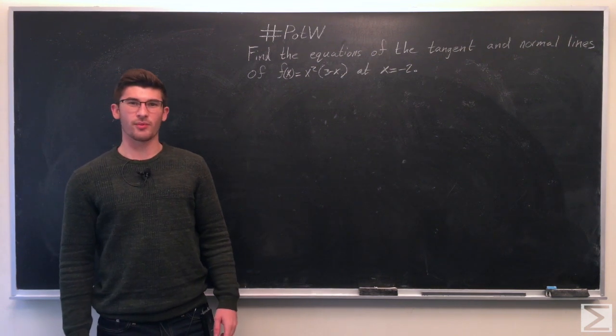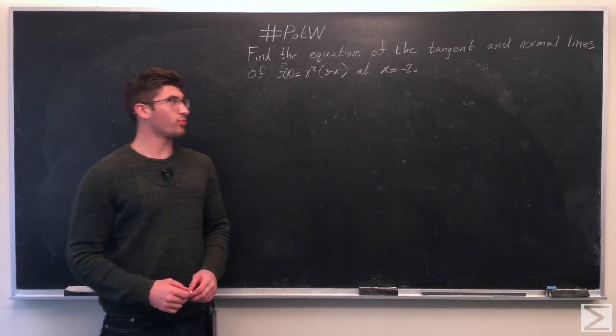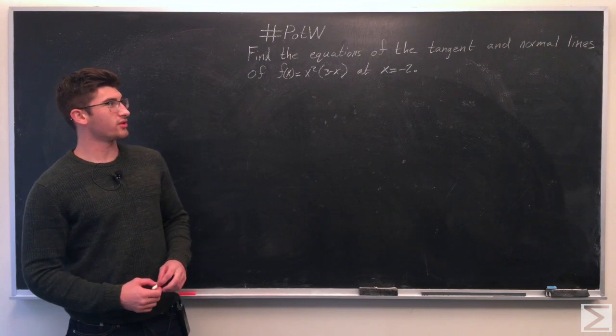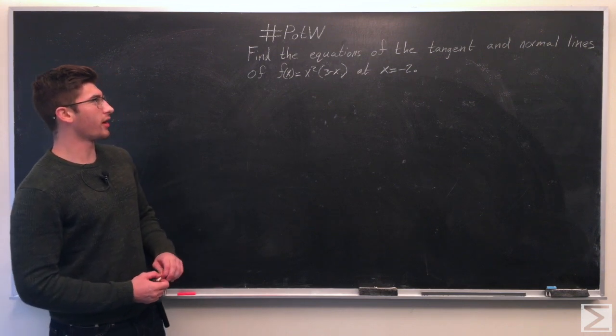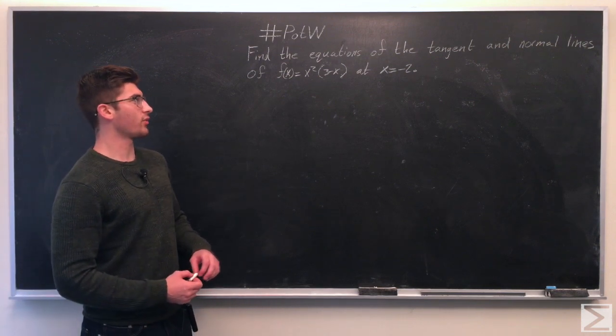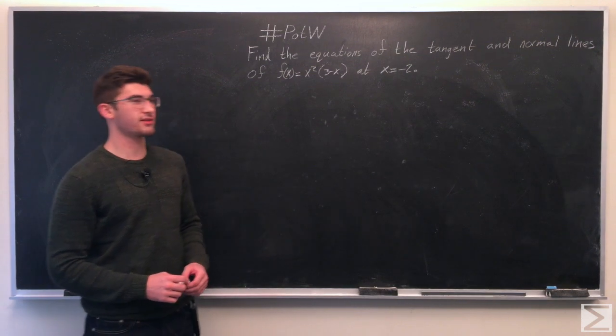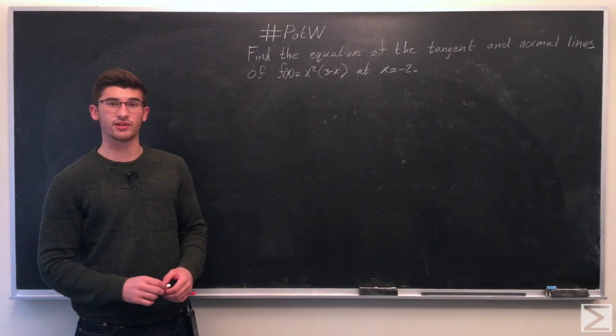Hello. Welcome to the Center of Maths Problem of the Week. In this week's problem, we're being told to find the equations of the tangent line and the normal line of f of x equals x squared times 3 minus x at x equals negative 2.